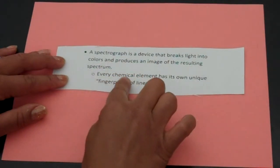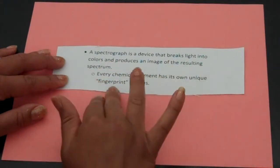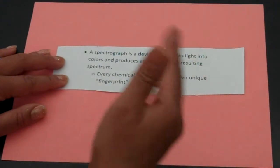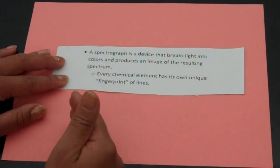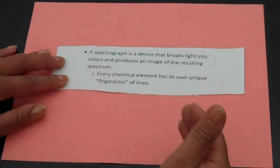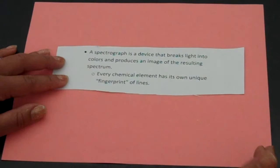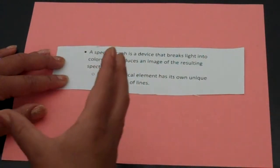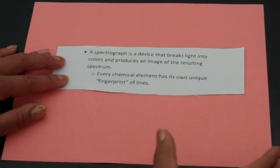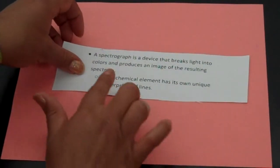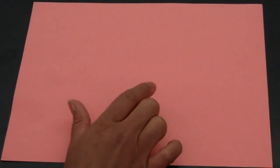Every element has its own unique fingerprint pattern. So sometimes there's more red, yellow, orange, blue, green, or purple. Depending on the pattern, there could be certain amounts of each color, and that's unique to that type of element.